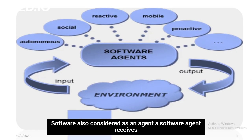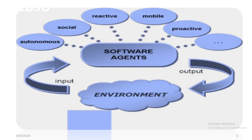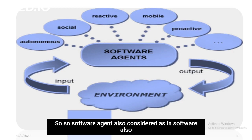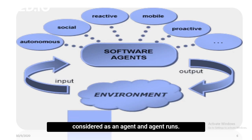Software is also considered an agent. A software agent receives keystrokes, file contents, and network packets as sensory inputs, and acts upon that by displaying contents on a screen, writing files, and sending network packets. So a software agent is also considered an agent.